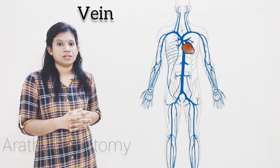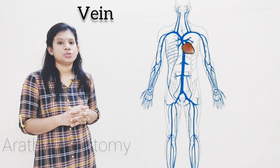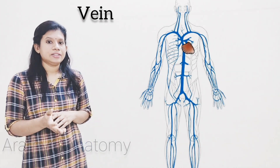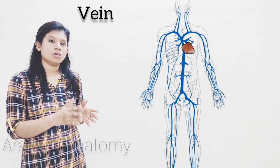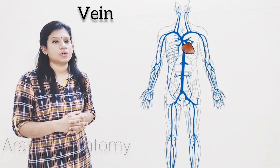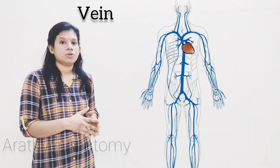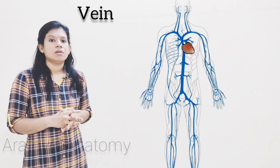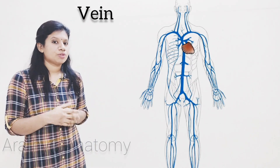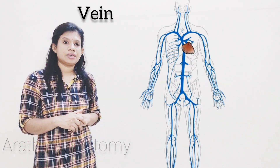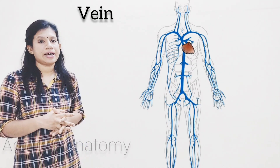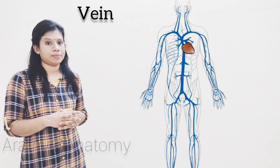The second one is called as vein. Vein usually carries deoxygenated blood and carries it towards the heart. But there are exceptions for this also — the pulmonary vein and umbilical vein, both of them carry oxygenated blood.